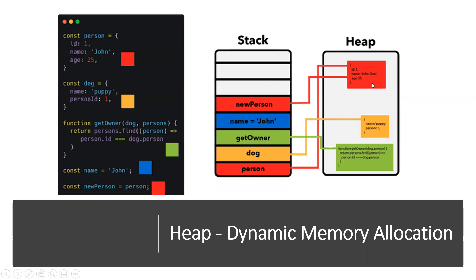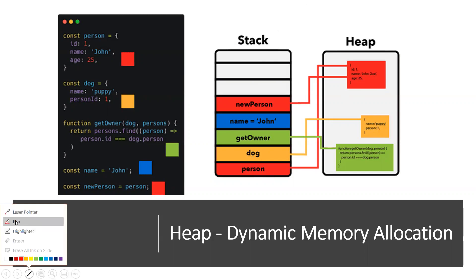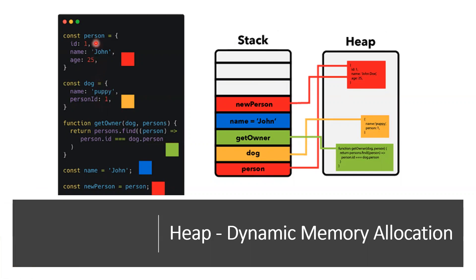If you observe here, the person is an object — it would be stored in the heap, and its reference would be stored in the stack. So the stack holds all primitive types and also references. The reference to this object is present in the stack. Similarly, the dog object and a function would also go into heap memory, and their references would be pointed to in the stack.